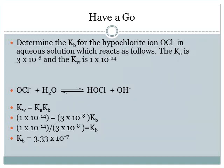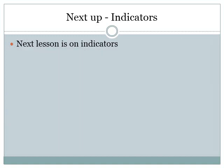One more example: determine Kb for the hypochlorite ion OCl⁻ in aqueous solution, given Ka = 3 × 10⁻⁸ and Kw = 1 × 10⁻¹⁴. Using Kb = Kw / Ka: Kb = (1 × 10⁻¹⁴) / (3 × 10⁻⁸) = 3.3 × 10⁻⁷. So when given either Ka or Kb, and knowing Kw = 1 × 10⁻¹⁴, you can always find the unknown ionization constant. The next lecture in the acid-base series will cover indicators.